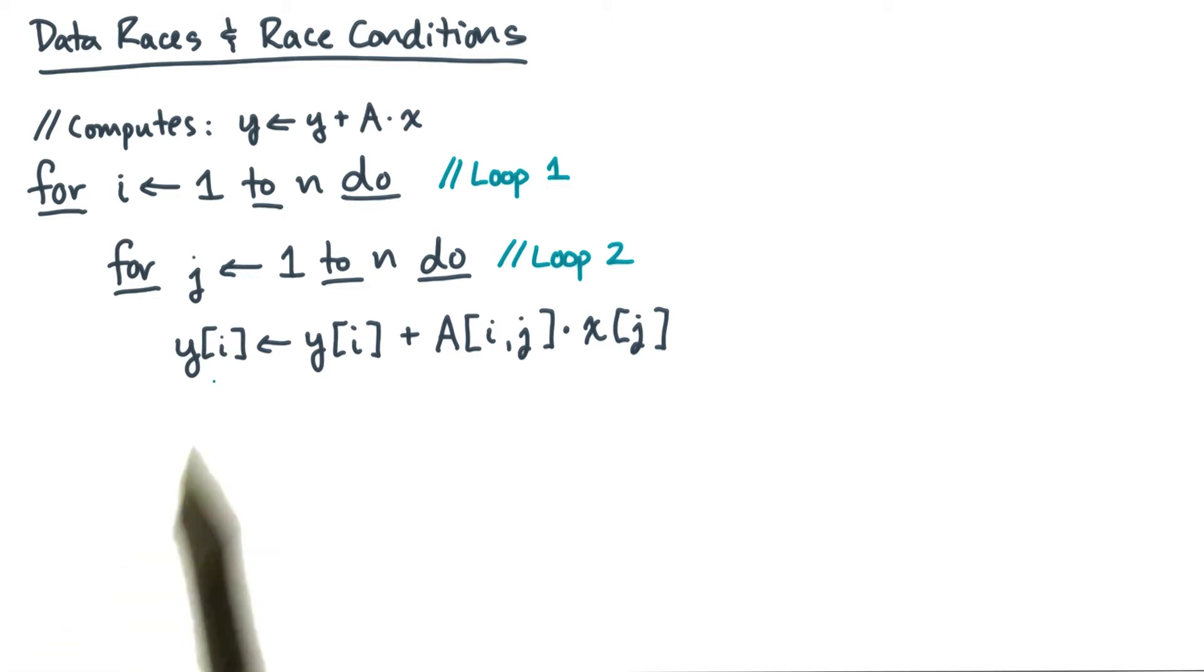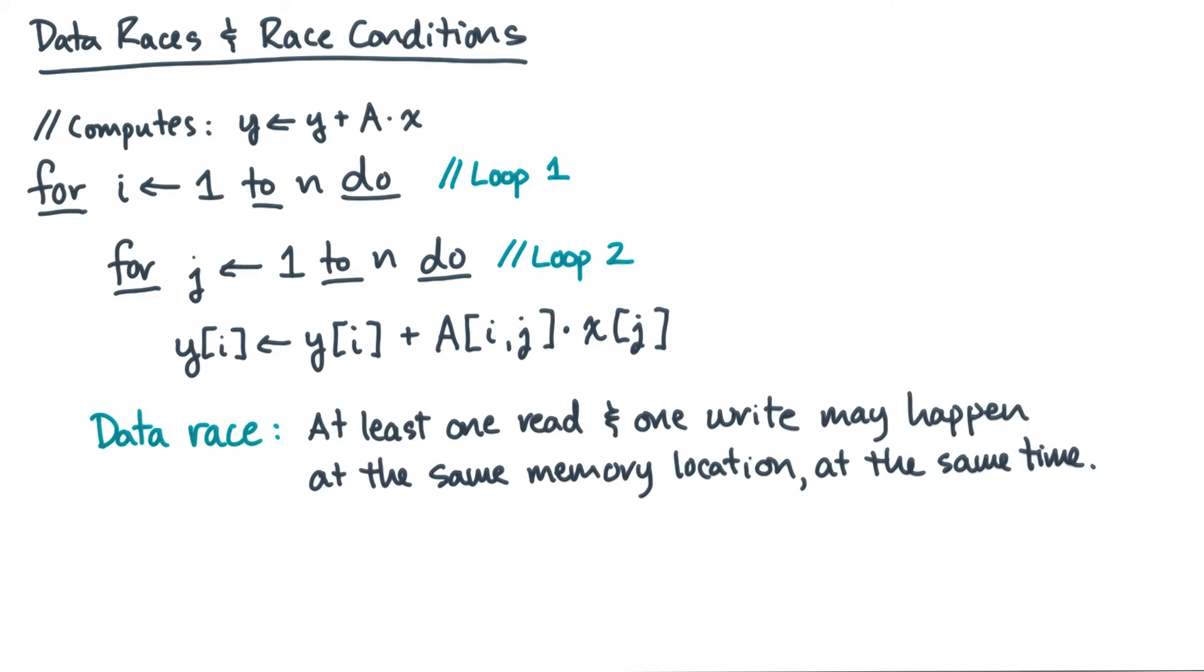First, observe that all iterations j write to the same location y sub i. This situation is called a data race. More precisely, a data race is at least one read and at least one write that can happen at the same memory location at the same time.